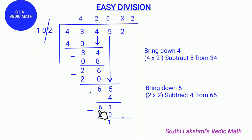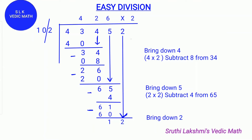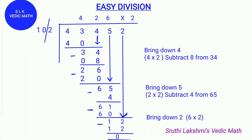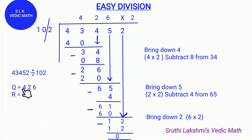Next we subtract 61 minus 60, which gives us 1. Next we bring down the 2. Then we do the last digit of the quotient times the last digit of the divisor: 6 times 2 is 12. So we do 12 minus 12, which gives us 0. So the quotient is 426 and the remainder is 0.